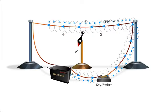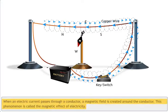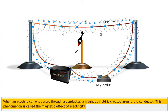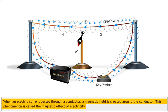As you saw in Oersted's experiment, when an electric current passes through a conductor, a magnetic field is created around the conductor. This phenomenon is called the magnetic effect of electricity.